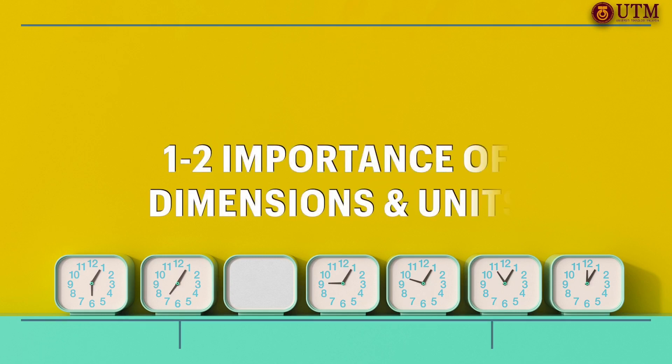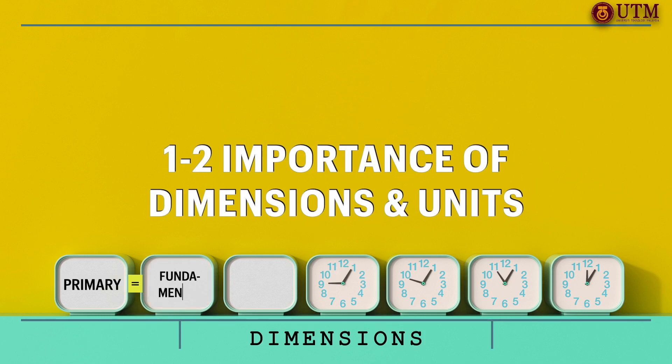Now, let us move to subtopic 1.2. It is about importance of dimensions and units. Any physical quantity can be characterized by dimensions. Dimensions can be divided into two categories. The first category is called primary or fundamental dimensions. Some basic dimensions such as mass, length, time and temperature are selected as primary or fundamental dimensions.